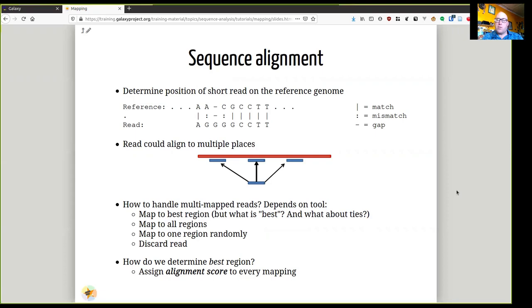But now if we want to map to the best region, because there could be partial matches in multiple places, how do we determine the best region? We do that using an alignment score, which we assign for every mapping.